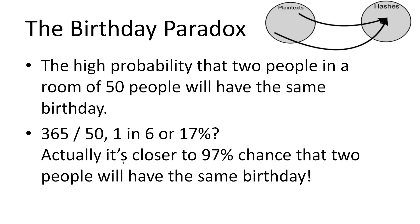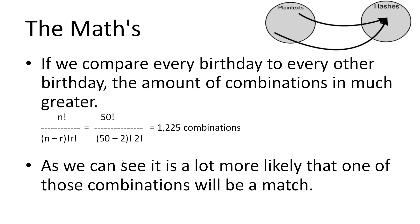Just thinking about it — 365 days in a year, 50 people — that's about a 1 in 6 or a 70% chance. This is actually wrong. In reality, it's about a 97% chance that two people will share the same birthday. So how can this be possible? Well, let's have a look at the maths.